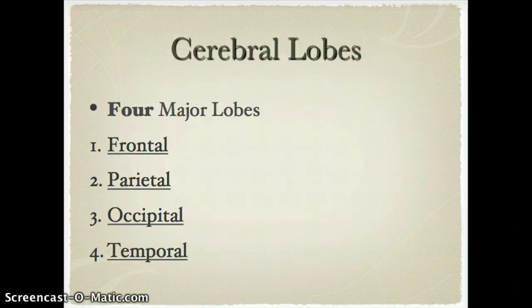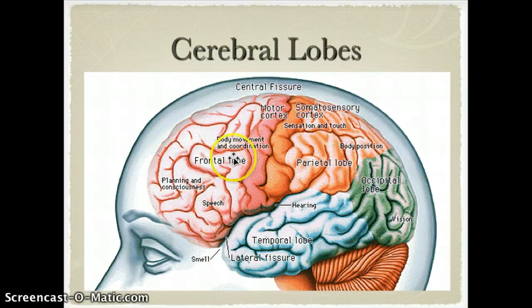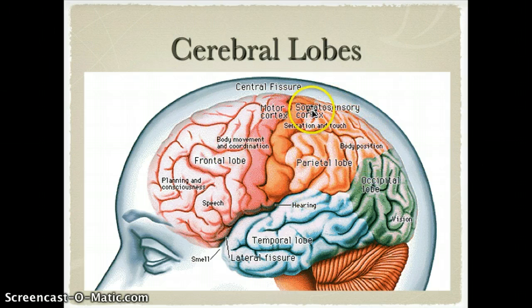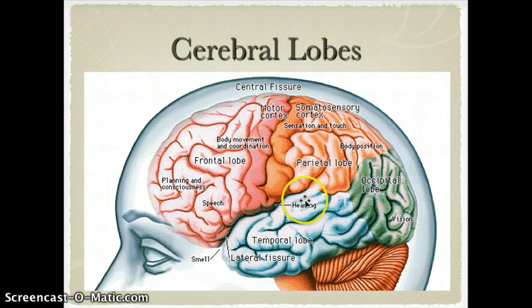Now let's look more broadly at the cerebrum and talk about the four major lobes of the brain: the frontal lobe, the parietal lobe, the occipital lobe, and the temporal lobe. The frontal lobe is associated with speech, planning, and consciousness, as well as body movement and coordination. The parietal lobe handles sensation, touch, and body position. The occipital lobe in the very back is for vision, and the temporal lobe on the side is labeled for hearing.